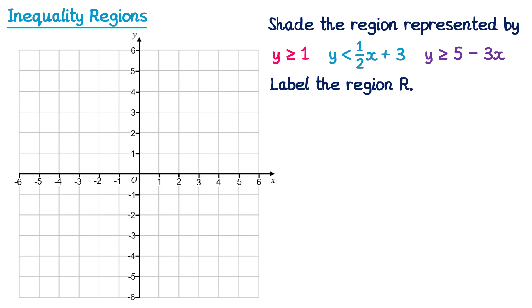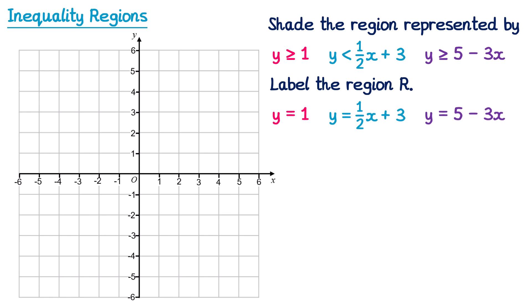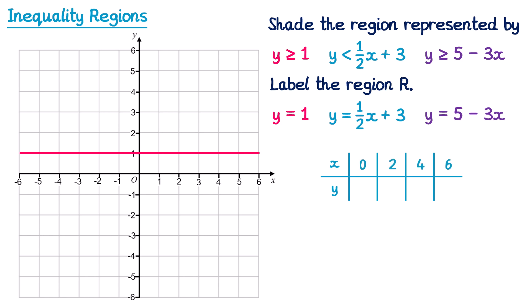Let's try another example with the inequalities involving y = 1, y = ½x + 3, and y = 5 − 3x. y = 1 is a horizontal line through 1 on the y-axis, drawn solid because it was ≥. For y = ½x + 3 I use a table of values with even x values — 0, 2, 4, 6 — to avoid fractions, giving y values of 3, 4, 5, and 6.